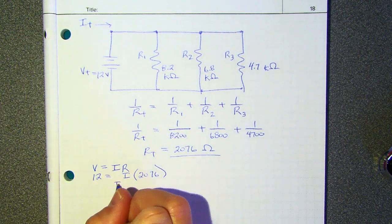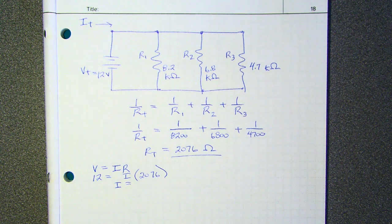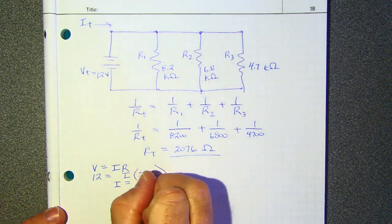And if I'm trying to solve for I in this little algebra setup, that's going to be 2076 divided by 12. 2076 divided by 12 is 173. Okay, I like it. 173.